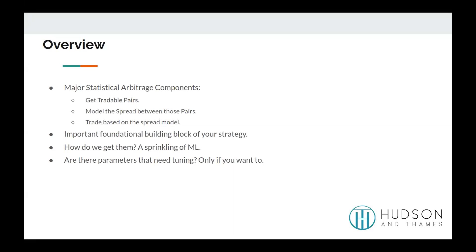Today I'm going to be talking about the application of machine learning for pairs selection. Statistical arbitrage can be split into three major components: acquiring tradable pairs, modeling the spread between those pairs, and trading based on the forecast of that spread model. As you can see, the first step is a very important foundational block relative to the final result of the trading strategy. In this presentation, I'm going to present a new approach to this first step by using machine learning.